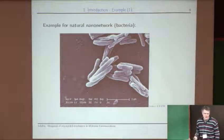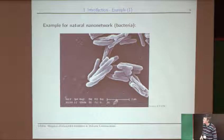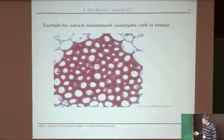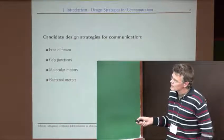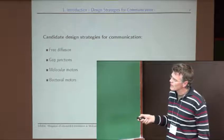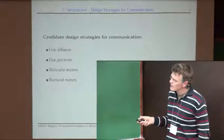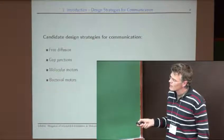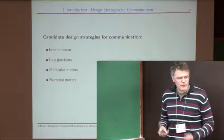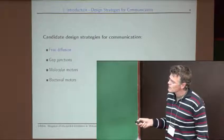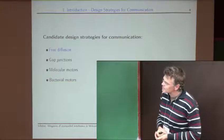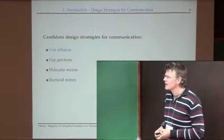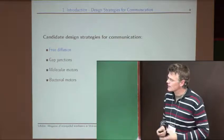To build such systems, we try to identify the performance bottlenecks and develop techniques to overcome them. Natural systems using molecular communications include bacteria doing quorum sensing and cells in tissue communicating via molecular means. There are four options to implement man-made molecular communication systems: free diffusion, gap junctions, molecular motors, and bacterial motors. Here I concentrate on free diffusion, since it requires no additional infrastructure and no external energy beyond what's needed to produce the molecules.